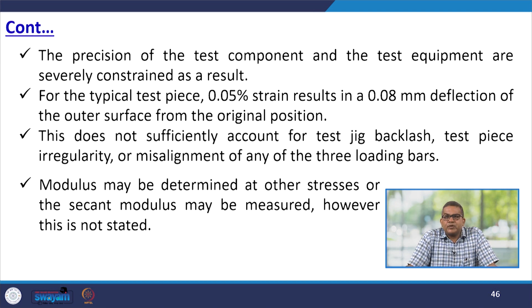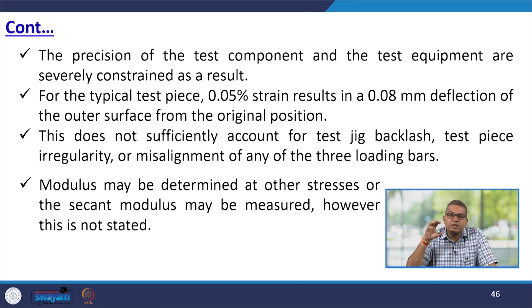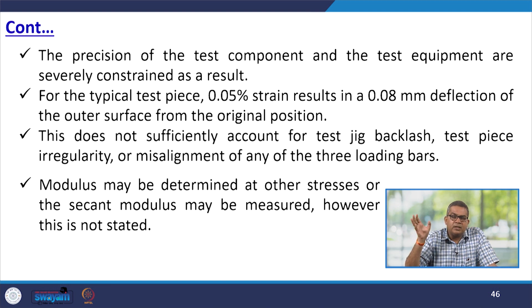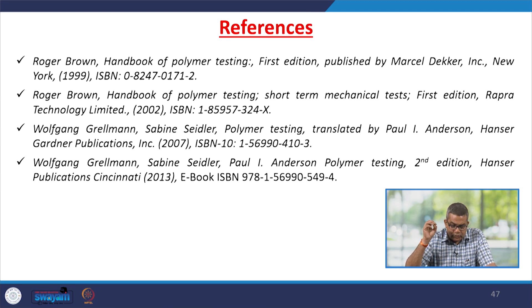For a typical test piece, 0.05% strain results in 0.08 mm deflection of the outer surface from the original position. This does not sufficiently account for test jig backlash, test piece irregularity, or misalignment of any of the three loading bars. Modulus may be determined at other stresses as well, though this is not explicitly stated. In this particular segment we discussed the test protocols for flexural stresses and related properties. For your convenience, different references have been listed which you can utilise as per your requirement. Thank you very much.